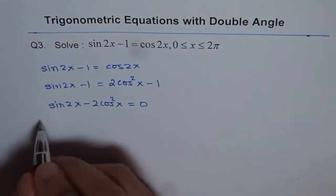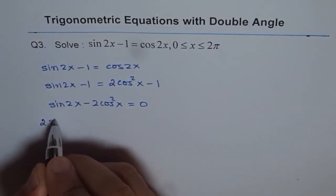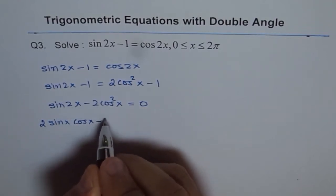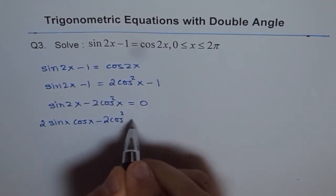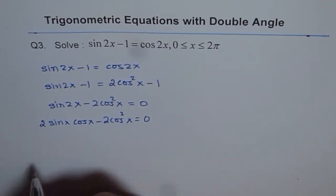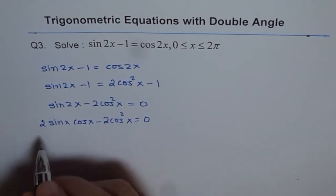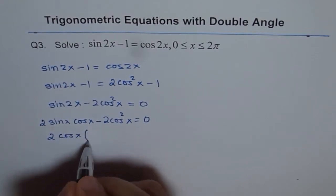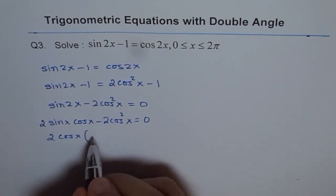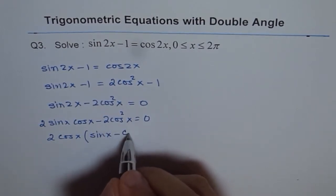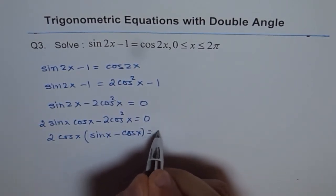We can write sin 2x as 2 sin x cos x, and we have minus 2 cos² x equals 0. Now we can factor out 2 cos x. We get 2 cos x times sine x minus cos x equals 0.